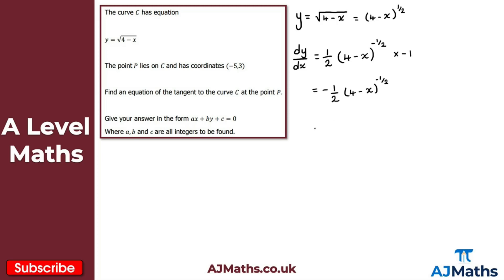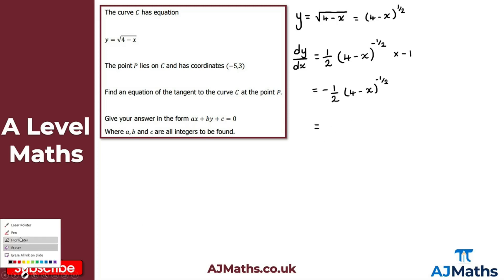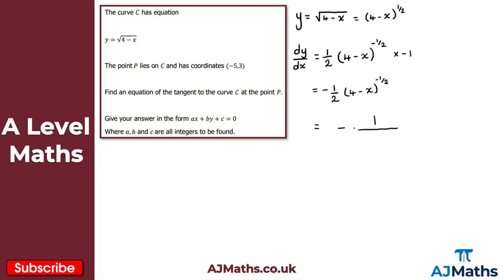We can rewrite this as minus 1 over 2 times the square root of (4 − x). These are equivalent — I'm writing it this way because it will be easier to evaluate the gradient at the given point. So this is dy/dx.